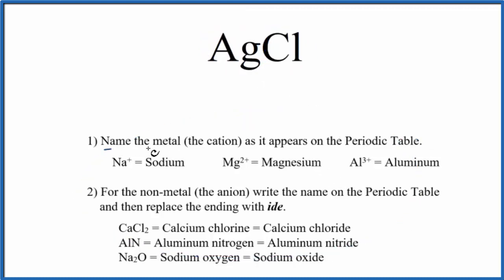First, we write the name of the metal as it appears on the periodic table. Ag, that's silver.